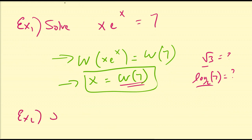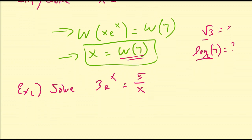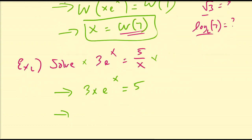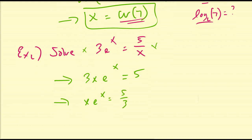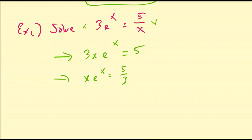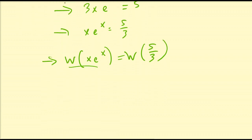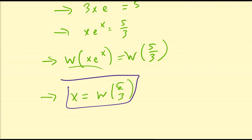Suppose we have another equation: solve 3eˣ = 5/x. I want to get an x·eˣ term so I can apply the Lambert W rule. Multiplying both sides by x gives 3x·eˣ = 5. Dividing both sides by 3 gives x·eˣ = 5/3. Now applying the Lambert W function to both sides: W(x·eˣ) = W(5/3), and by the properties of Lambert W, x = W(5/3). This is the algebraic solution to the given equation.